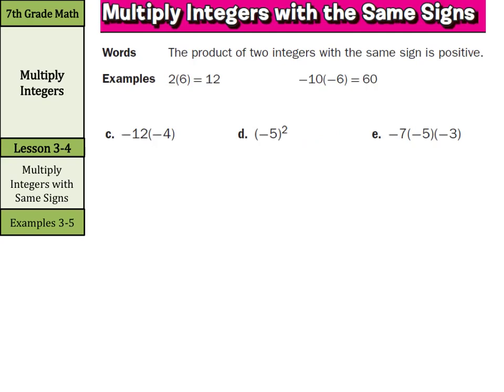When we have the same signs, the product of two integers with the same sign is positive. So we have negative 12 times negative 4, that's positive 48. Here we have negative 5 squared. What is negative 5 squared? That's negative 5 times negative 5, and negative 5 times negative 5 is simply 25.